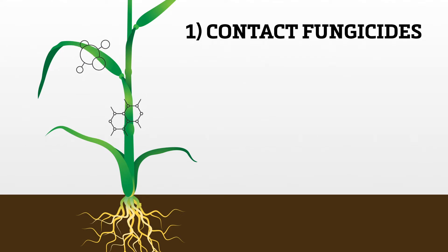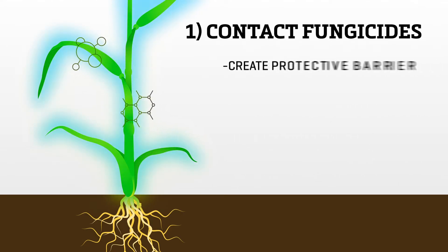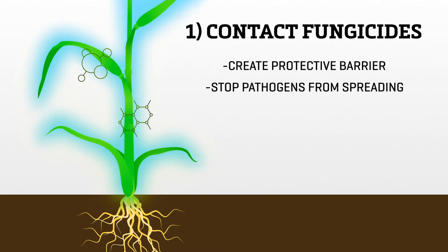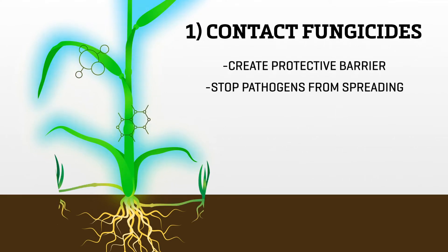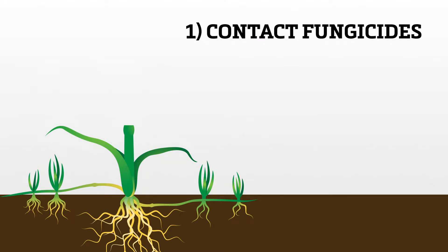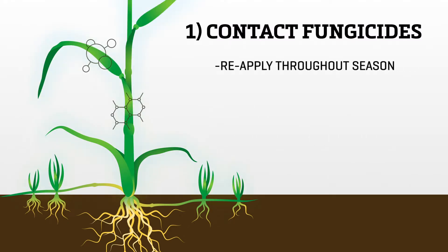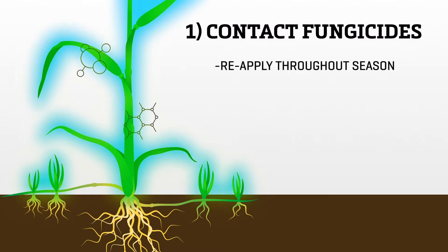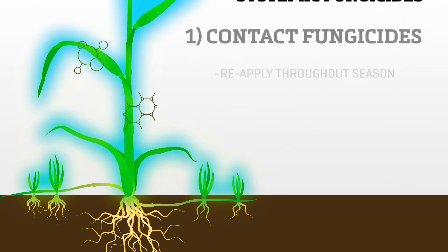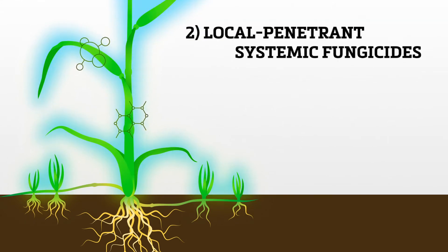First, there are contact fungicides. They are highly effective on preventative application and work by creating a protective barrier on the leaf and stem that prohibits pathogens from spreading. Because the product may be removed through new growth or mowing, contact fungicides require reapplication throughout the season. This is an effective option for battling gray leaf spot and dollar spot.